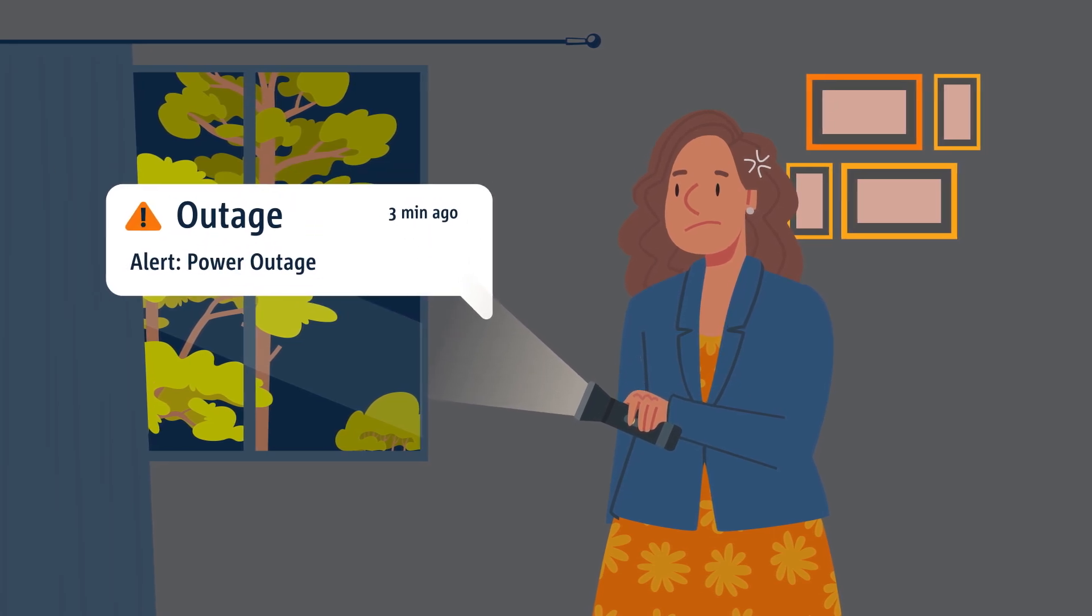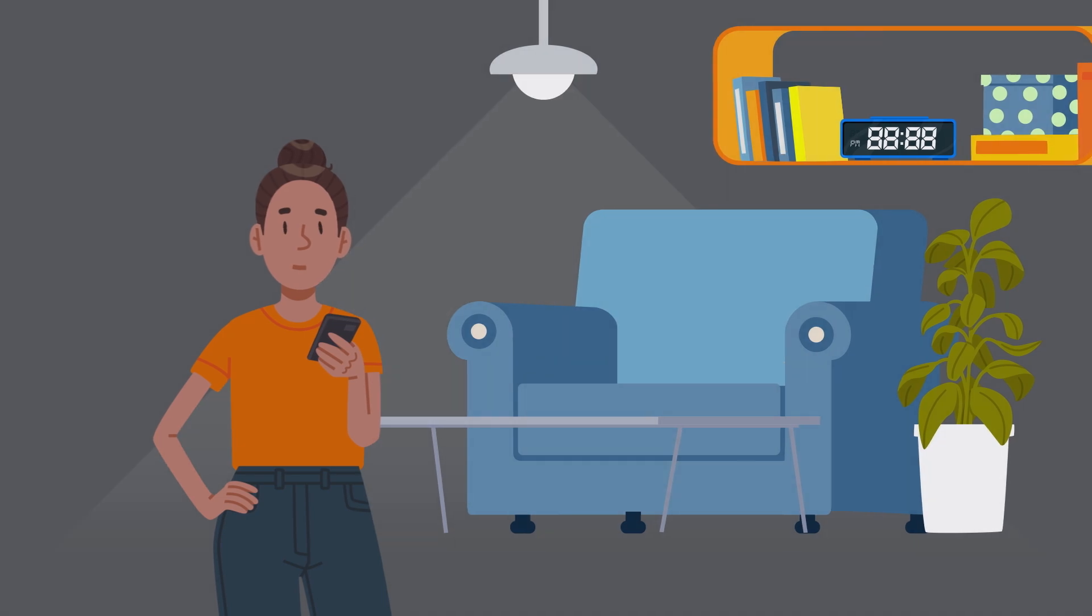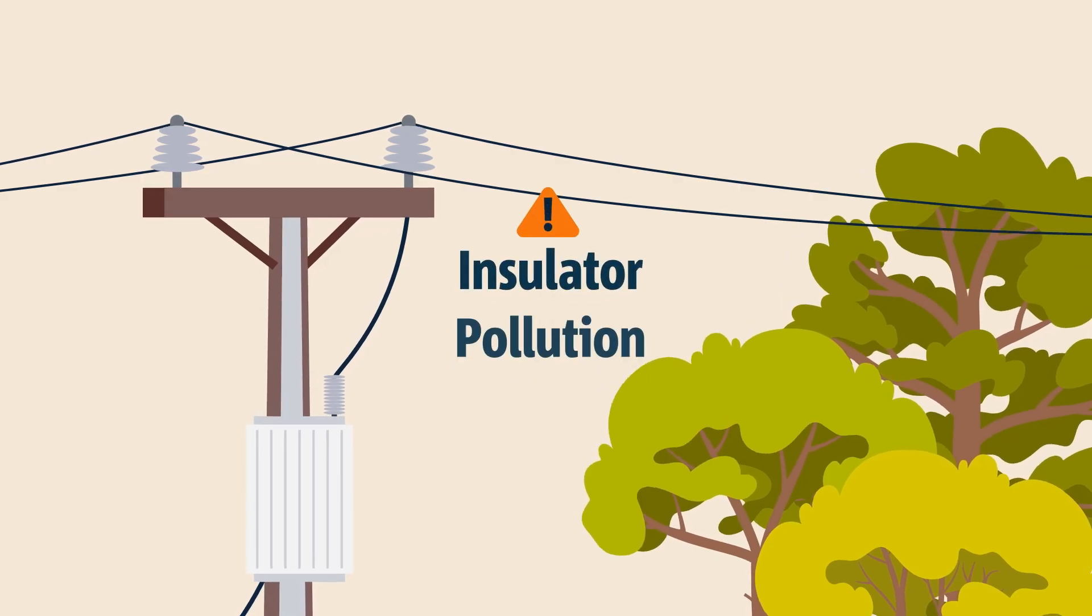Are you experiencing more power outages than usual? Or perhaps you've noticed your power briefly flicking off and on again? It could be due to an issue called insulator pollution.